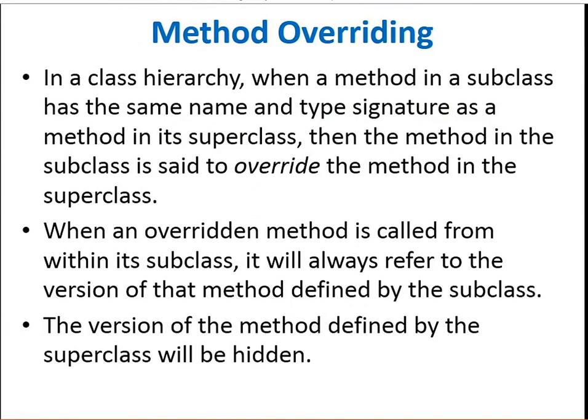Now let's discuss method overriding. In a class hierarchy in Java, when a method in a subclass has the same name and type signature as a method in a superclass, then the method in the subclass is said to override the method in the superclass. In simple words, if the method name and signature — meaning with the parameters — are the same in the parent class as well as the child class, then the subclass method is called the overridden method.